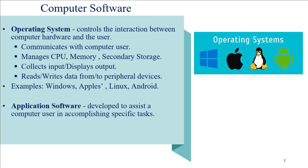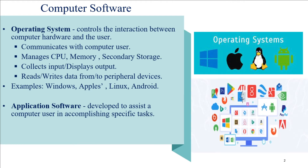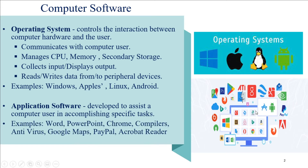Examples of operating systems are Windows, Apple, Linux, Android, and so on. Application software is developed to assist a computer user in accomplishing specific tasks. Examples include Word, PowerPoint, Chrome, C compiler, antivirus software, Google Maps, PayPal, Acrobat Reader, and many other applications. All of these fall under application software. Compiler, linker, loader, assembler, and operating system — these five fall under system software; everything else falls under application software.